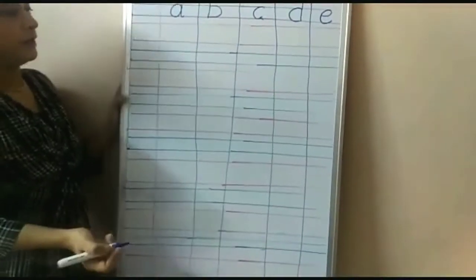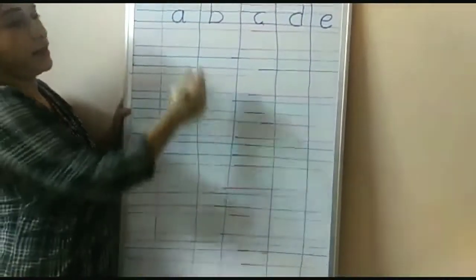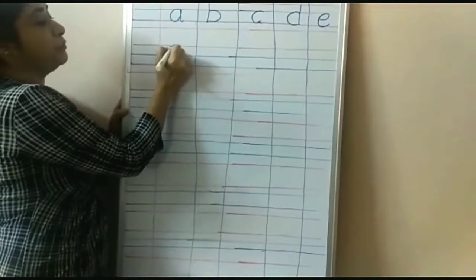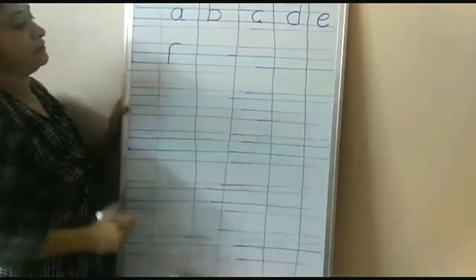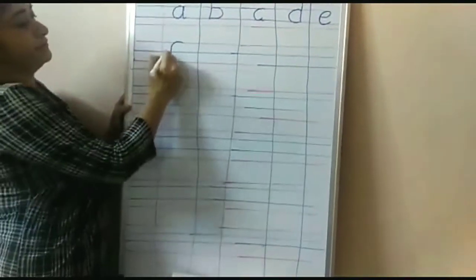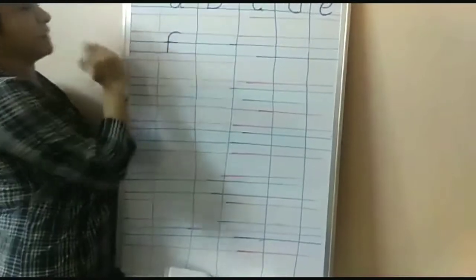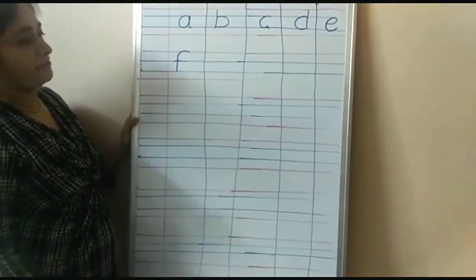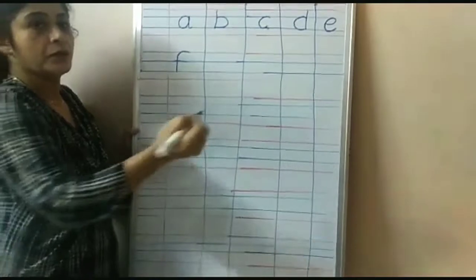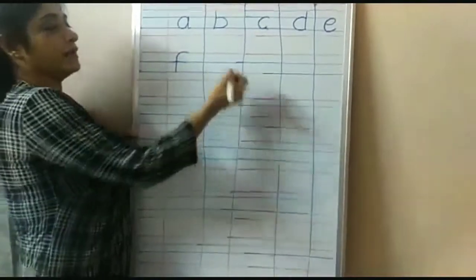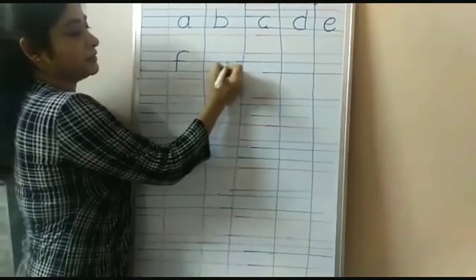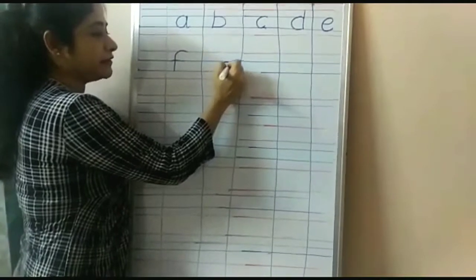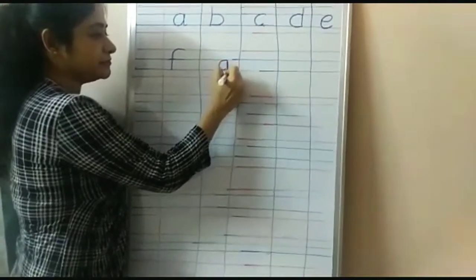Okay, now blue line to blue line — E. Over. Now F, from red line to blue line. Make a curve and a clipping line — F. Now G, from blue line to down red line — G.